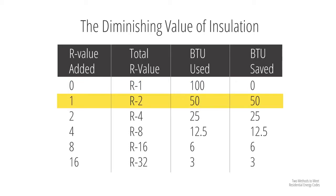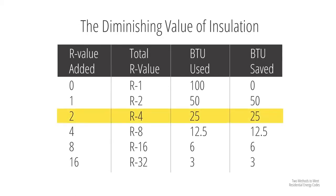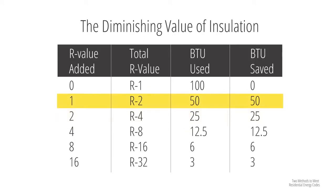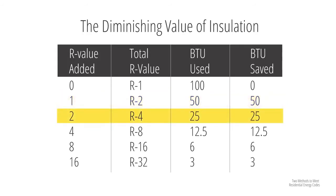In the second row, we add R1, which doubles our system R value to R2. Since we doubled our R value from R1 to R2, we cut our energy loss in half — from 100 to 50 BTUs, saving 50. Now we want to save more energy, so we double the R value again from R2 to R4, adding two more R. This cuts our current energy use in half: from 50 to 25 BTUs, saving 25. Notice — adding our first R saved 50 BTUs, but adding two more only saved 25 BTUs, or 12.5 per R.